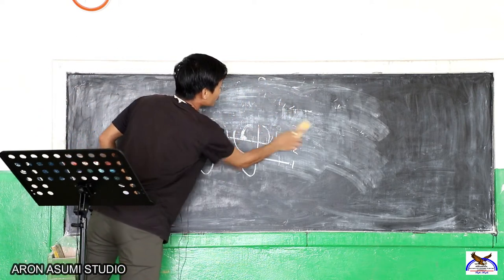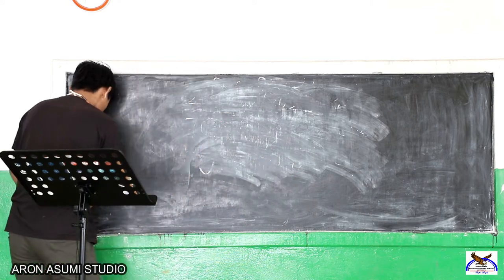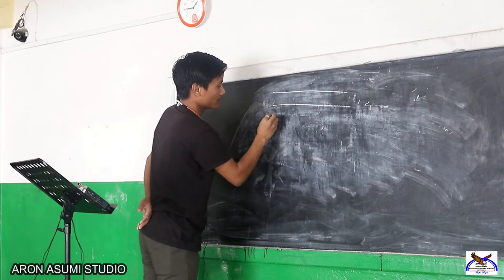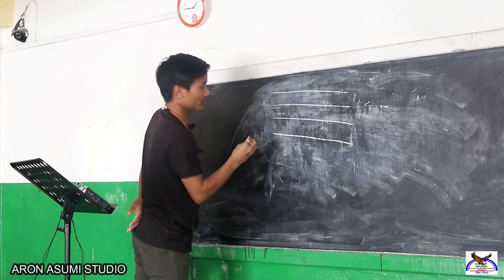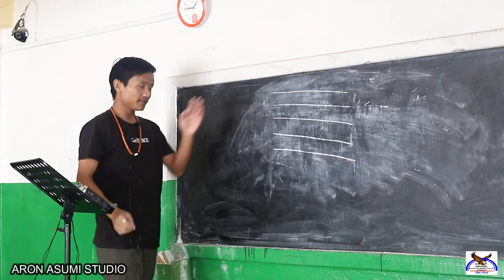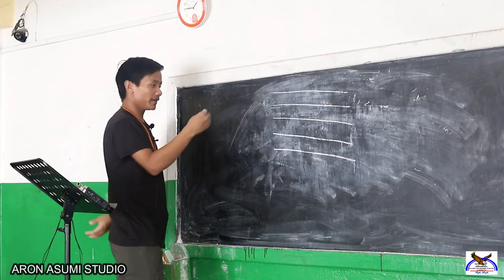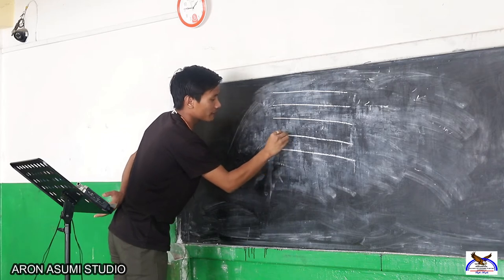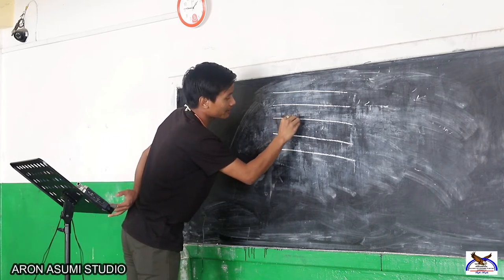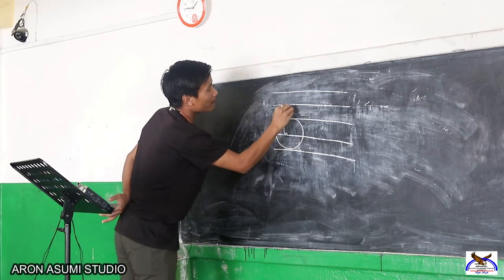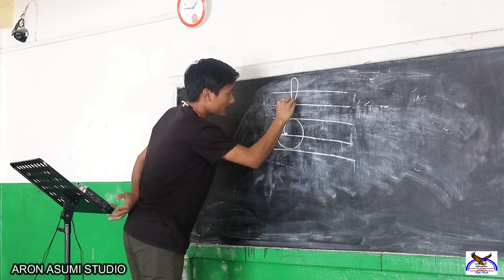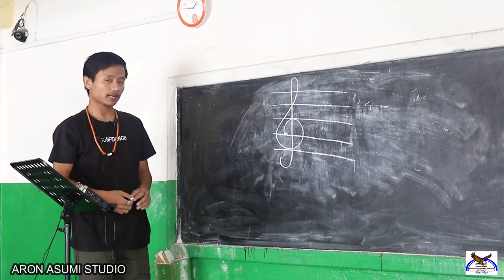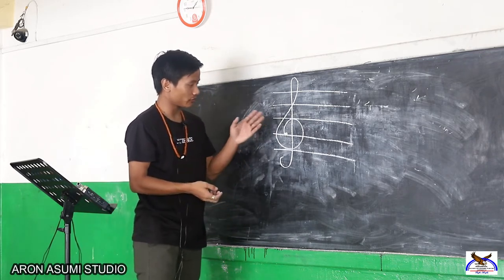Let's go through that once more, a little bit faster. First, draw the 5 lines. To draw the treble clef: draw a little dot on the second line, take it up to the third line, bring it down to the first line, go up and make a turn on the fourth, go up to the fifth, meet on the fourth, and then make a final turn. That is how you draw your treble clef.